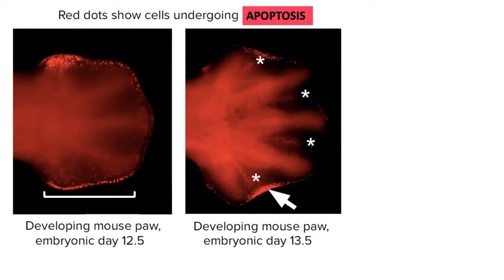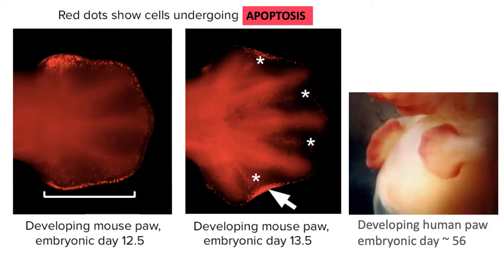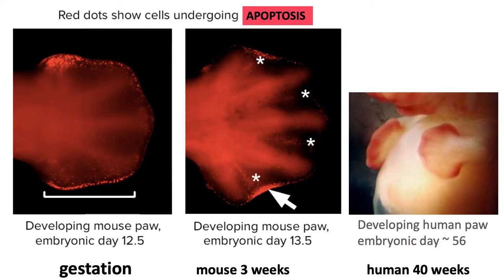Look carefully at this diagram. Here we have a developing mouse paw at day 12.5 of its embryo stage. The bright red dots show where apoptosis is going on. A day later at 13.5, the apoptosis has sculpted away the webbing between the fingers. This happens in humans too — here's a human at day 56 that also has webbing between its fingers, which will also undergo apoptosis. Mice have a 3-week gestation period while humans have 40 weeks, explaining the difference between days 12-13 versus day 56.